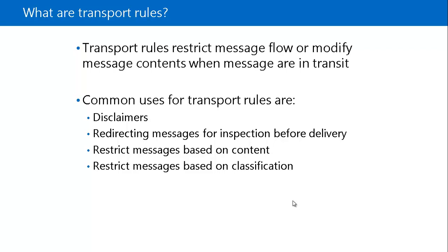Transport rules can apply restrictions based on message classification to protect confidential organizational information. You can also track or journal messages that specific individuals send or receive — those messages are sent to a journal inbox so you can monitor them. You can also redirect incoming and outgoing messages for inspection before delivery.